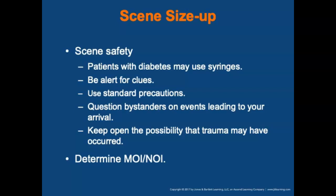For patient assessment of diabetes, start with the scene size-up. Evaluate scene safety and ensure all hazards are addressed. Be careful of syringes used for insulin injections. Be alert for clues such as insulin bottles, plates of food, or glasses of orange juice that may indicate the problem. Use standard precautions, question bystanders on events leading to your arrival, and keep open the possibility that trauma may have occurred secondary to the blood sugar event. Determine the mechanism of injury or illness.